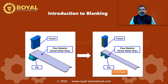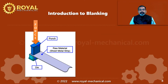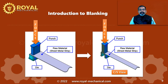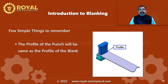Pause the video and have a closer look at the cross section view. When the press ram comes down, it applies the force on the raw material strip through the punch. The raw material strip is sheared between the cutting edges of the punch and the die. Pause the video and have a closer look at the cross section view.